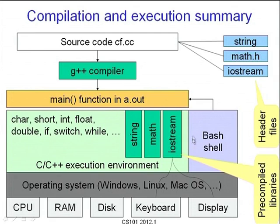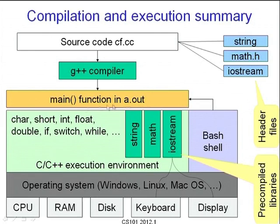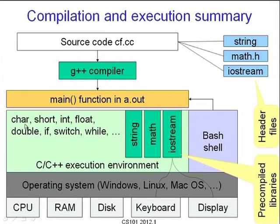On top of the operating system, two things are running. One is the bash shell, by which you interact with the hardware and make programs run. The other is the C or C++ execution environment, which actually comes into being when bash invokes your main function in a.out. The main function you wrote is packaged in a.out in suitable binary format, and when you type ./a.out in bash it transfers control to the main function. The execution environment supports certain things in native mode: it understands characters, short, int, float, double — it can represent those in RAM — and statements using if, switch, or while are executed directly.